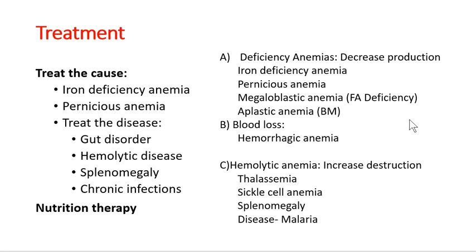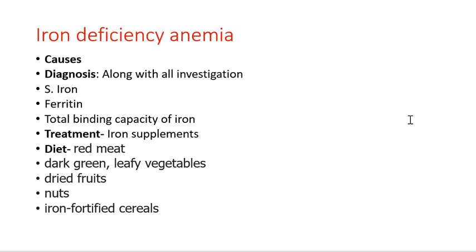Iron deficiency anemia is the most important question asked to paramedical and medical students. Causes fall under the same four headings discussed. For diagnosis, along with all standard investigations, serum iron, serum ferritin, and total iron binding capacity should be assessed. Treatment includes iron supplements and iron-rich foods in the diet. By focusing on the classification framework, every type of anemia can be addressed when asked.